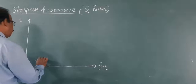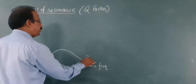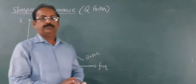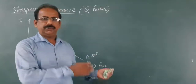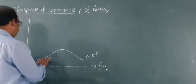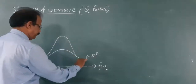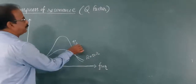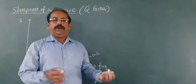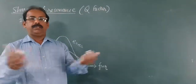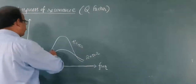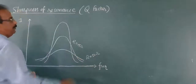Suppose we get one type of variation when the resistance in the circuit is 50 ohm. Now decrease the resistance — take 10 ohm, 15 ohm, 20 ohm, any value. What will happen? The current in the circuit will increase. When we decrease the resistance, the current in the circuit increases, and the variation of current against frequency changes accordingly.